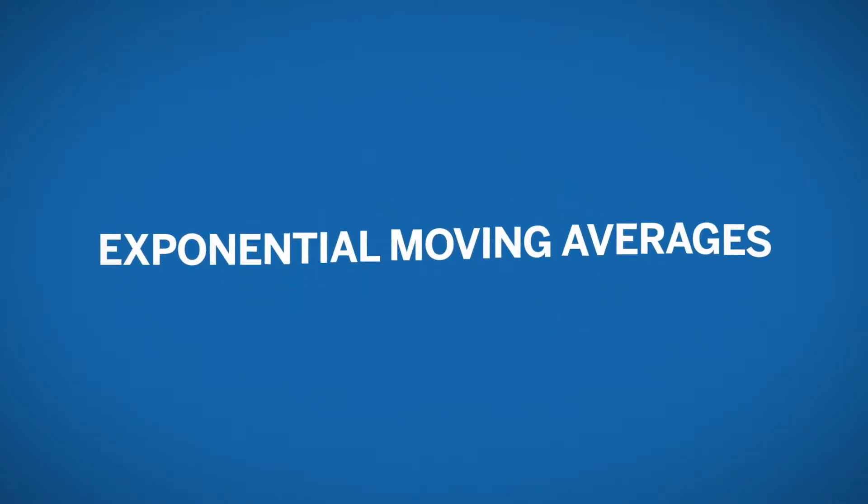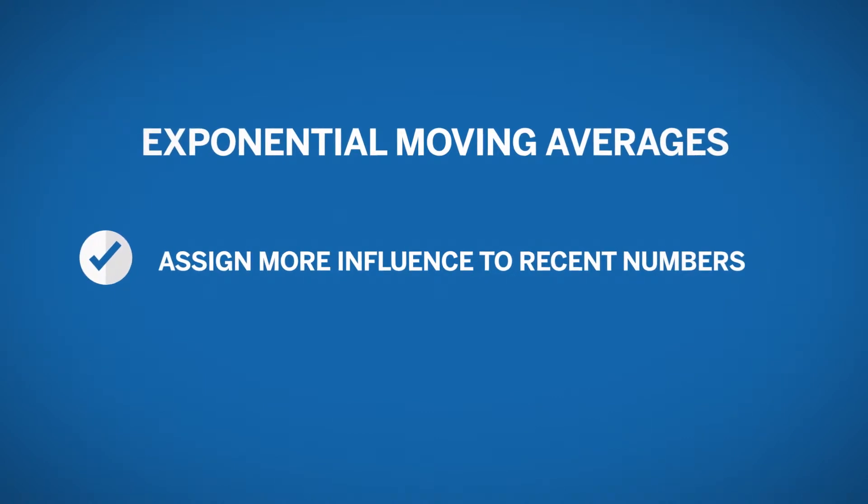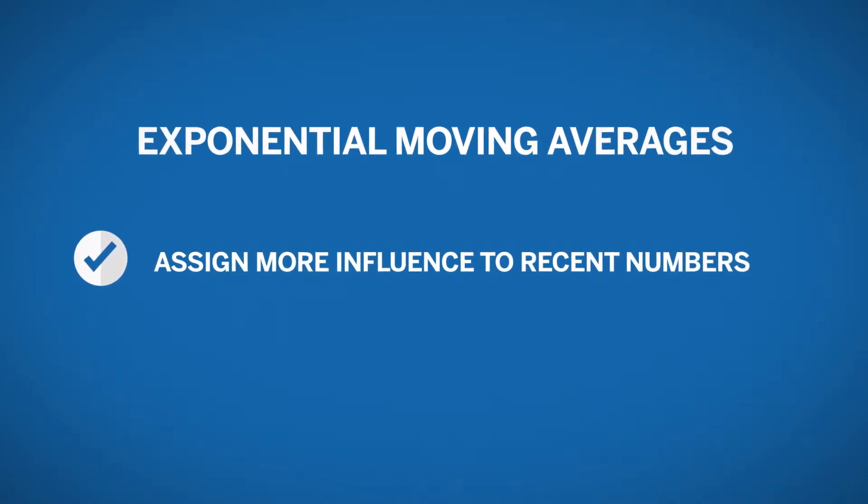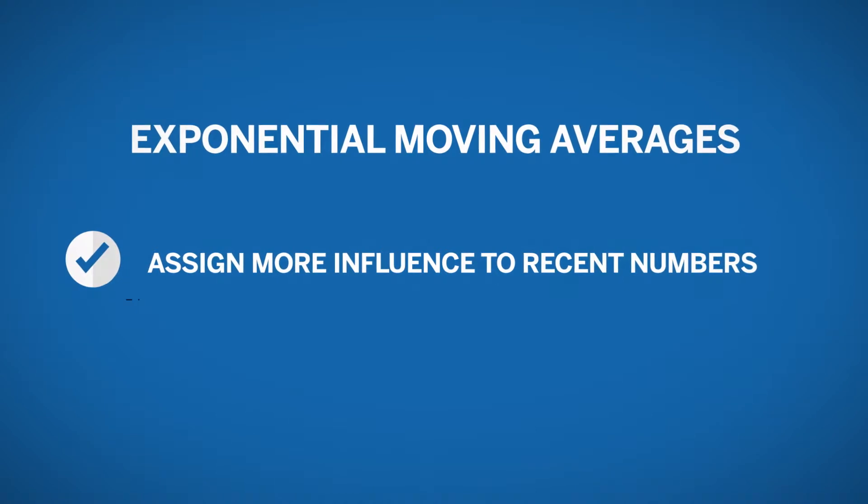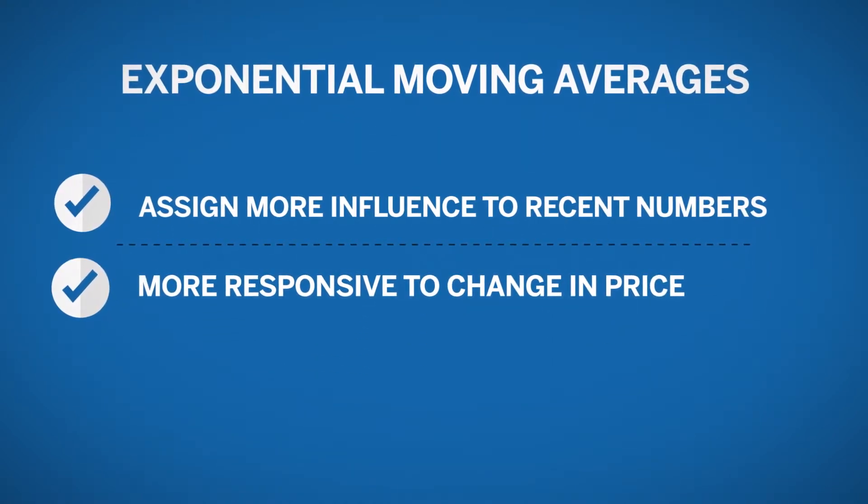Exponential moving averages are moving averages that assign more influence on recent numbers and less on old data because of a weighting variable in the calculation. This makes them more responsive to changes in price and also acts in smoothing out the line.